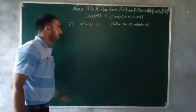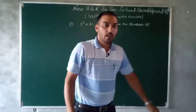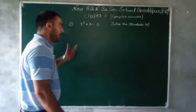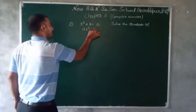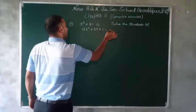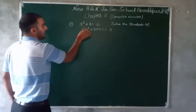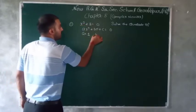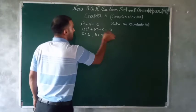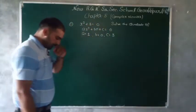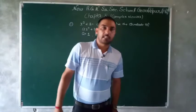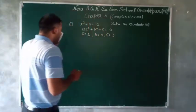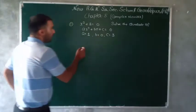इसको हम सीधा भी solve कर सकते हैं। x² + 3 = 0 को standard form ax² + bx + c = 0 से compare करें। तो a = 1 (coefficient of x²), b = 0 (कोई b term नहीं है), और c = 3।